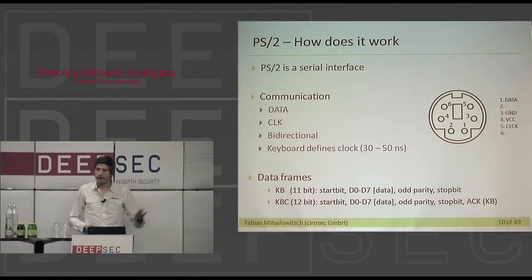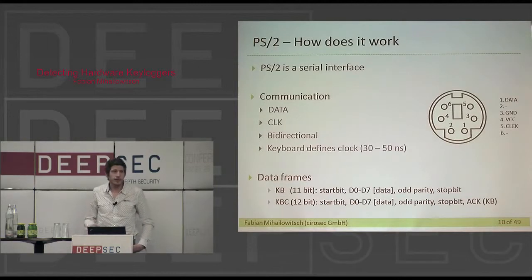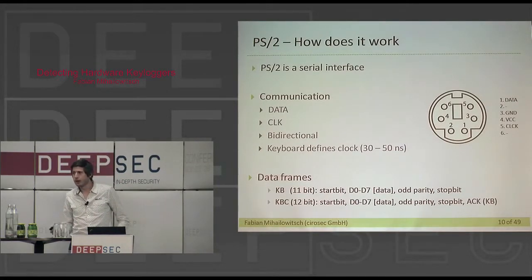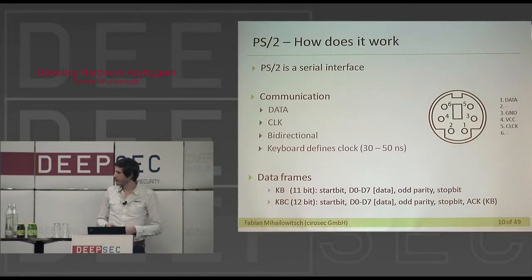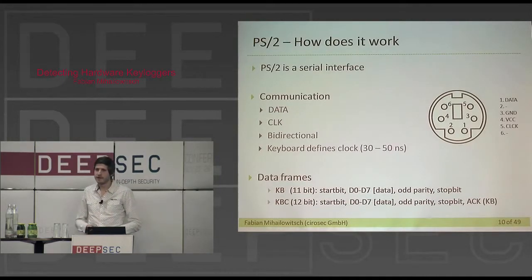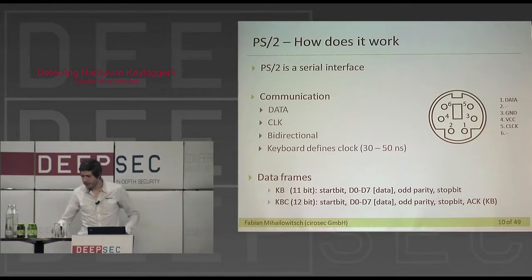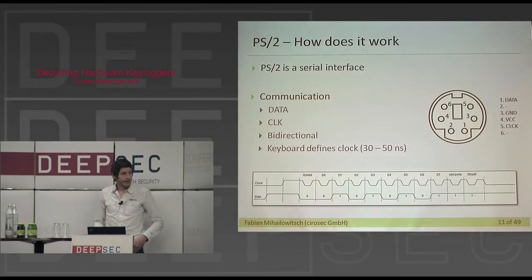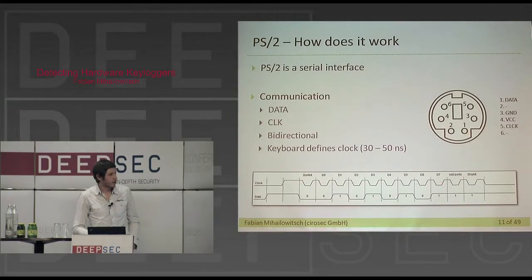The PS2 interface has two key pins: the data pin and the clock pin. The clock is defined by the keyboard and ranges between 30 and 50 nanoseconds. Data is transferred in 11-bit frames: a start bit, 8 data bits, a parity bit, and a stop bit. For KBC-to-keyboard direction, there is an additional acknowledge bit sent by the keyboard.